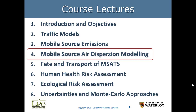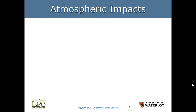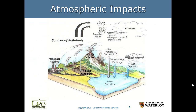All the topics we discuss here apply directly to non-road mobile sources, but our focus is solely on on-road mobile sources. What are the atmospheric impacts? We can see that we have man-made sources — those could be from factories, large stacks, or vehicles. We call these anthropogenic sources — sources that are caused by humans.